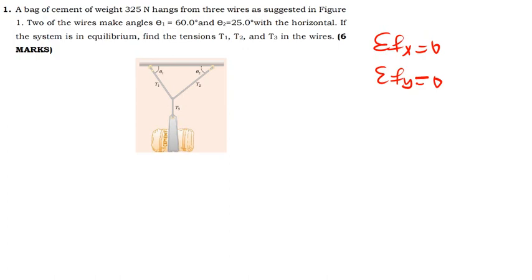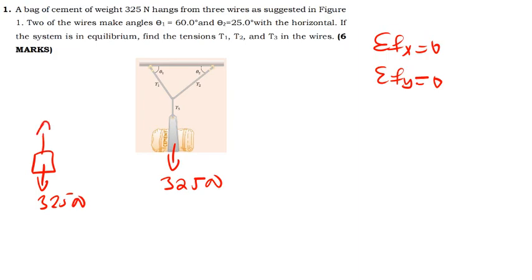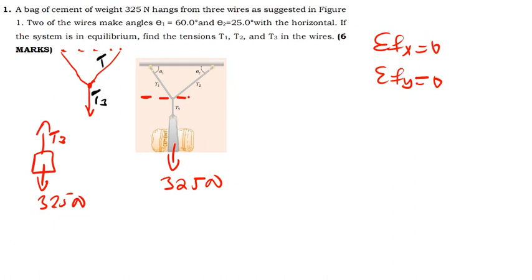The question is asking us to find T1, T2, and T3. I'm going to divide this into two parts. For the first part, we have the weight of the bag which is 325 Newtons and the tension T3. For the second part, I'll be dealing with T3, T1, and T2 together at the junction point.